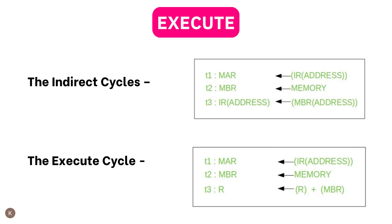The next part is the execute cycle. Step 1: the address portion of the IR is loaded into the MAR. Step 2: the address field of the IR is updated from the MBR, so the referenced memory location is read. Step 3: the contents of the register and MBR are added by the ALU.